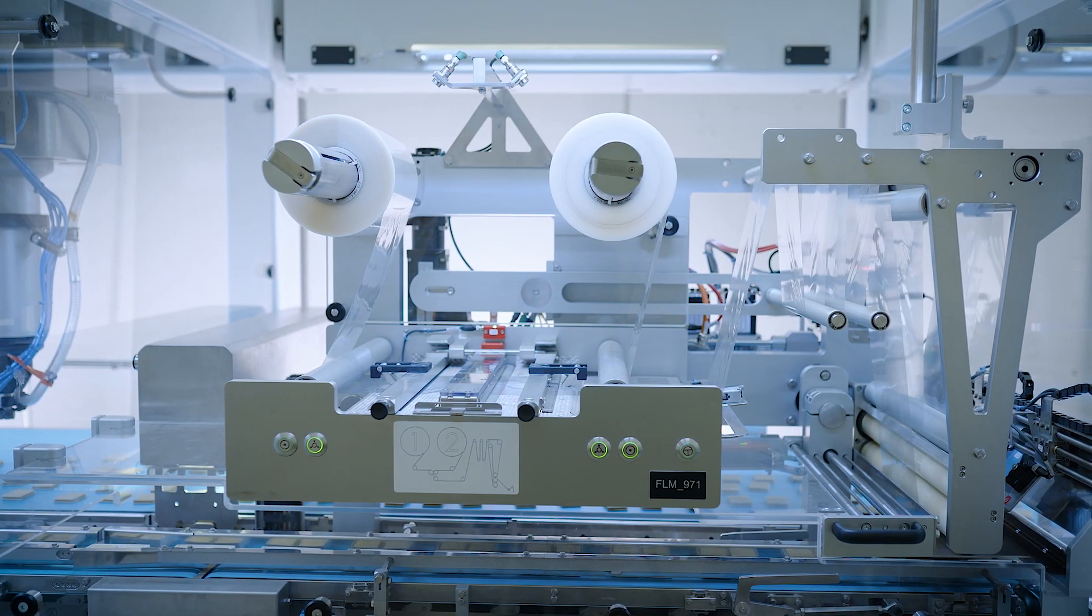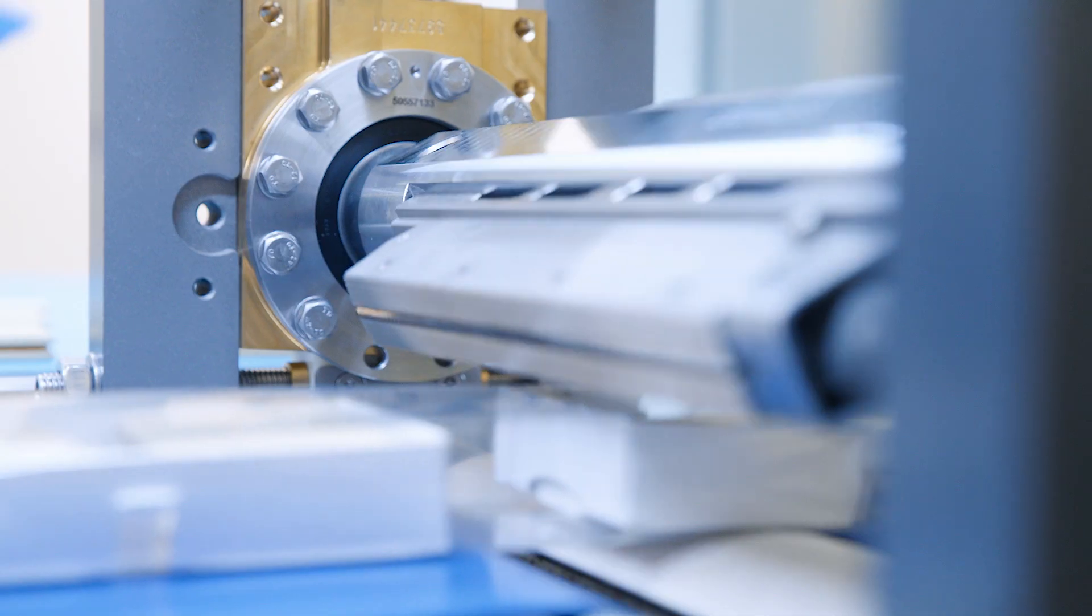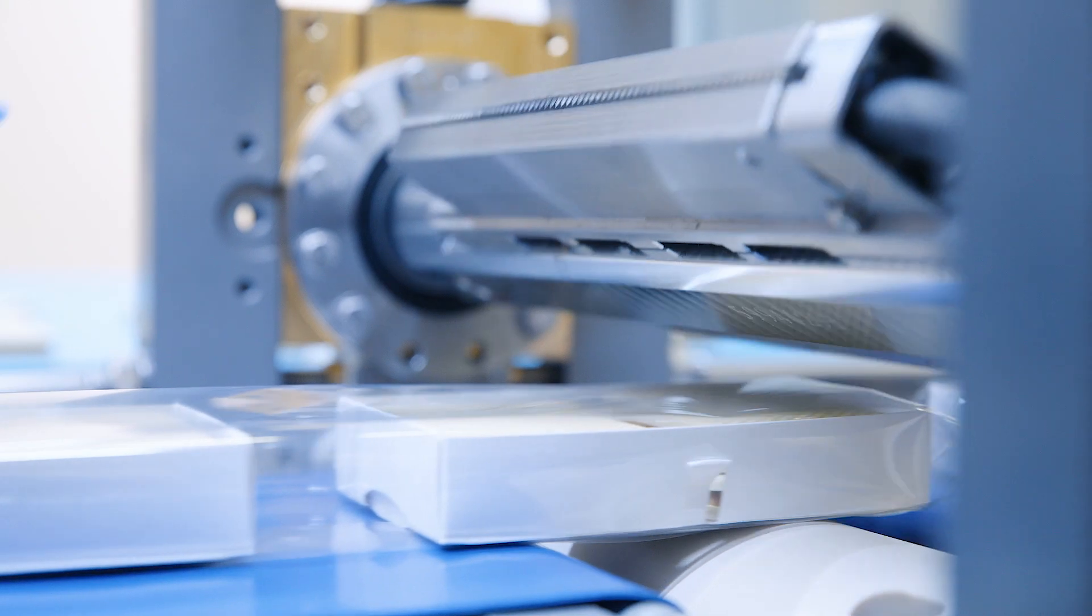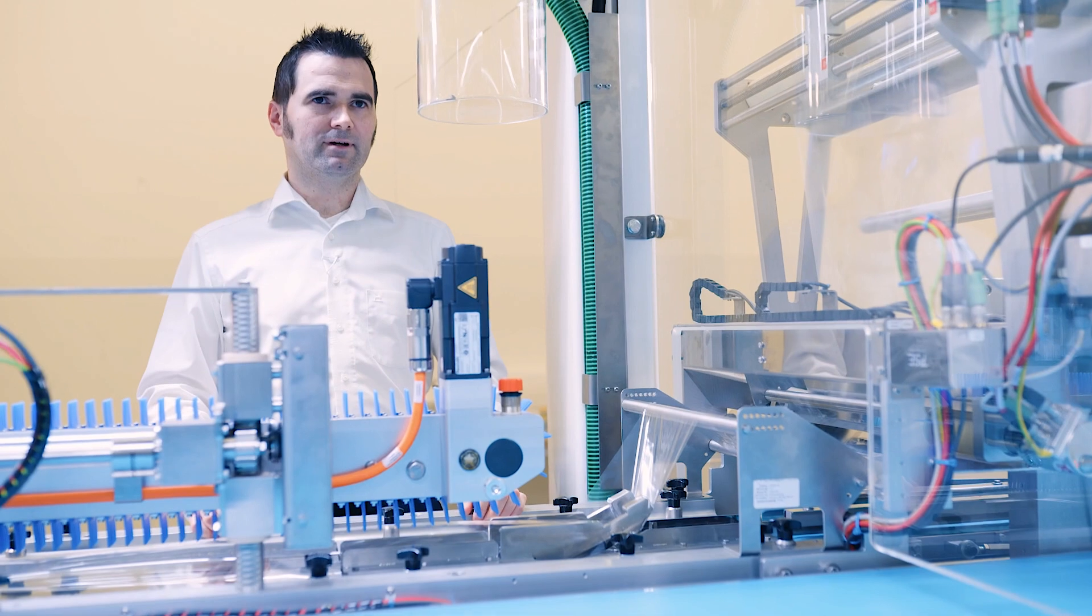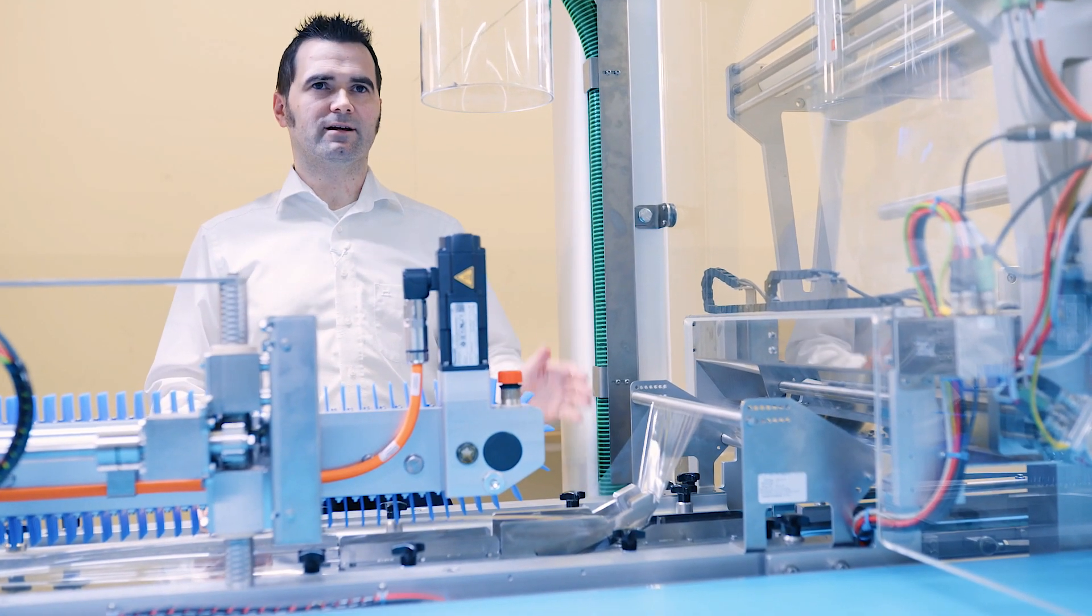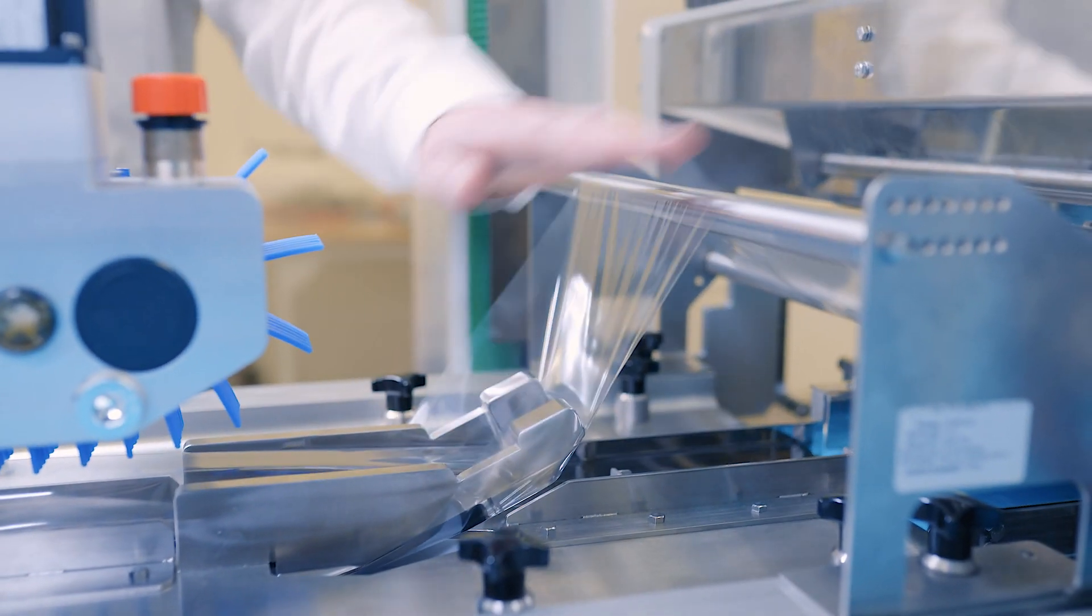Here at the flow wrapping station of the packaging machine, conventional plastic foil is used at the moment. But we can also use paper-based foil to create the flow wrap. Here, the flow wrap is being formed. If you now want to switch to a paper-based foil material, you only need to replace these three parts of the forming tool.